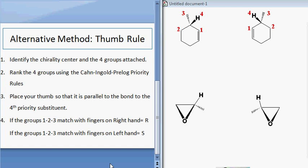If the groups 1, 2, 3 match the fingers on your right hand, in other words, your fingers are curving in a certain direction, and if that matches the 1, 2, 3 direction, it's R.